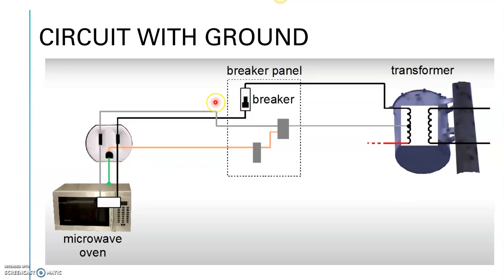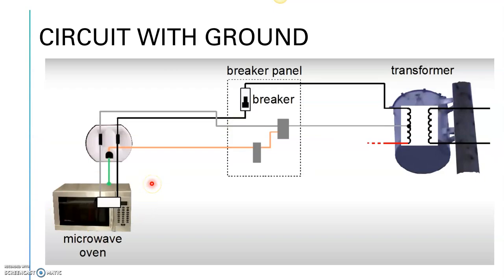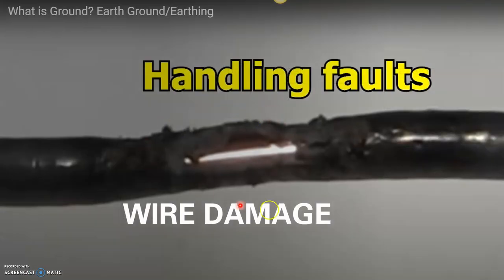Here we have a transformer — you can think of this as a switchboard — and an electrical appliance, represented here as a microwave oven, which we can also assume to be an irrigation controller. I'm going to discuss the importance of the ground wire. In normal operation, current flows from the hot wire through the appliance and returns through the neutral wire. But what happens if the wire gets damaged inside the electrical appliance?